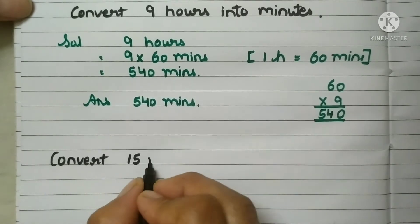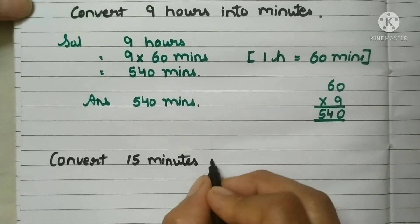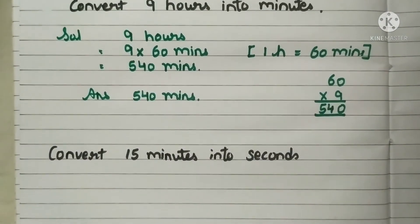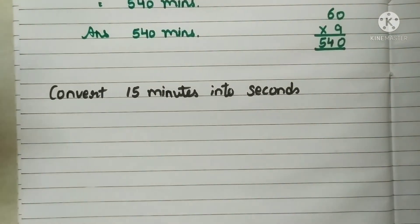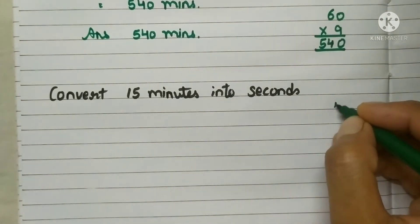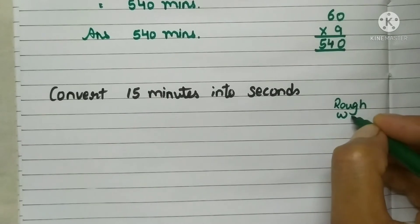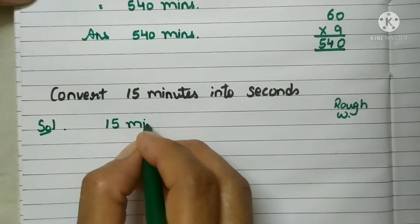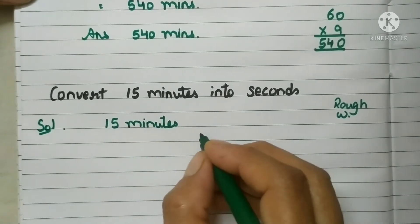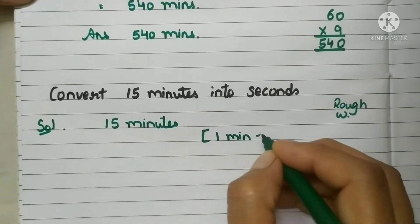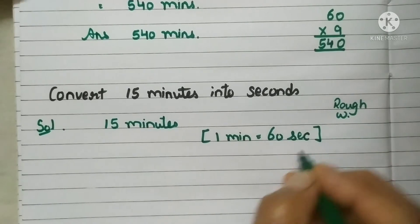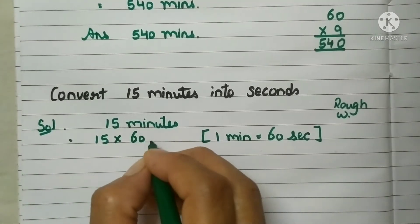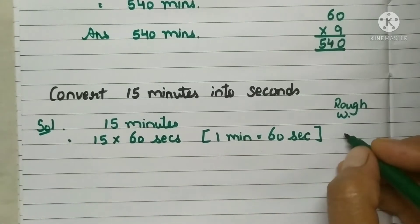Convert 15 minutes into seconds. Now we will make a margin that we will do rough work in this much area, this area is for rough work. So we will make it clear, this is rough work. So first again I will start with solution. I have to convert 15 minutes. Now the formula I know is 1 minute equals to 60 seconds. So instead of this minute I will write multiply 60 seconds. Now I will do this in a rough area.